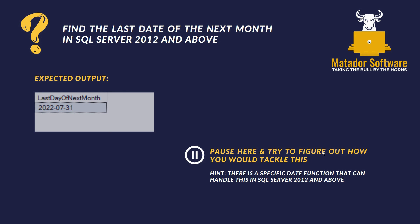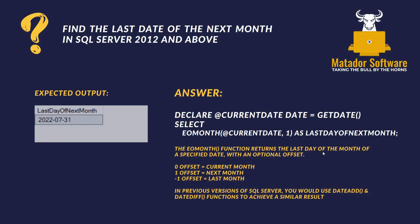The next question is a lot more generic: find the last date of the next month in SQL Server 2012 and above. It doesn't even matter about the datasets you're using — anyone can do this in SQL Server. There is a hint: in 2012 and above, there's a specific date function that can handle this. If you want to pause and do some research about that specific date function, you can.